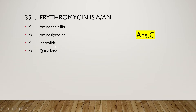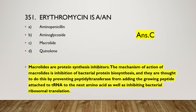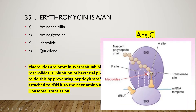The right answer is option C, macrolide. Macrolides are protein synthesis inhibitors. The mechanism of action of macrolides is inhibition of bacterial protein biosynthesis. They do this by preventing peptidyl transferase from adding the growing peptide attached to tRNA to the next amino acid, as well as inhibiting bacterial ribosomal translation.